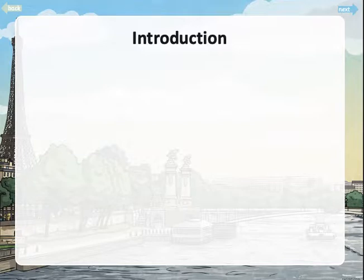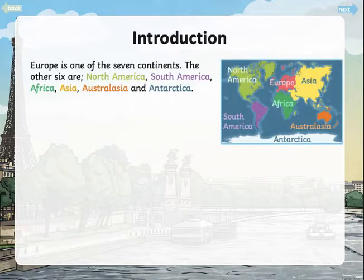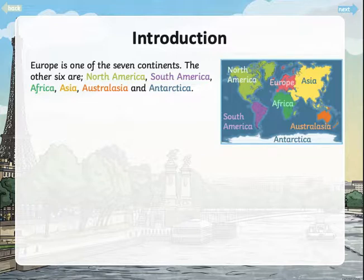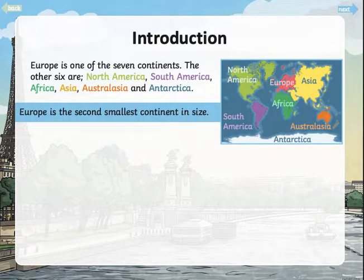Here's our introduction to Europe. Europe is one of the seven continents. The other six are North America, South America, Africa, Asia, Australasia, and Antarctica. On the picture you can see them all. Europe is the second smallest continent in size. If you look at the picture, Europe is in a sort of reddish-pink colour. I think the only smaller one is Australasia.